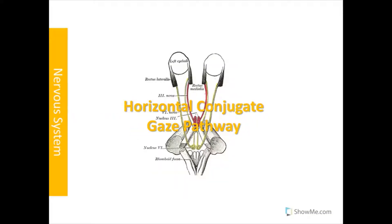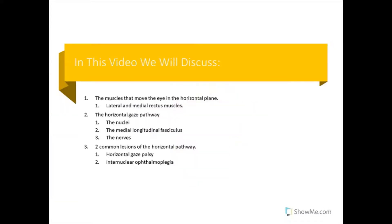Hello everyone, welcome to a brand new video on the horizontal conjugate gaze pathway. We're going to be discussing the muscles that control eye movement in the horizontal plane, looking at the lateral and medial rectus muscles. We'll discuss the pathway, the different nuclei, the medial longitudinal fasciculus, and the nerves that control the eye muscles. Then we're going to talk about two very common lesions: horizontal gaze palsy and internuclear ophthalmoplegia.